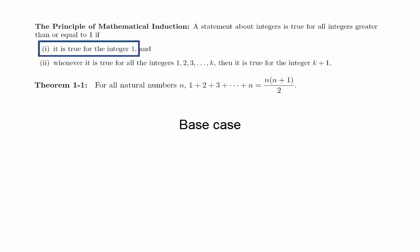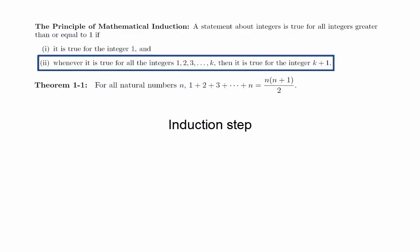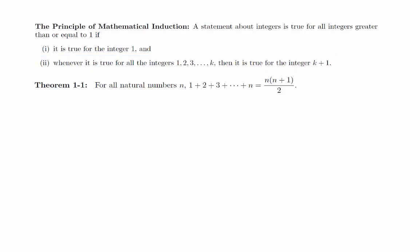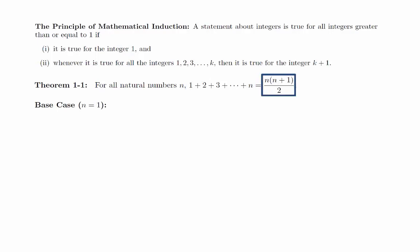The first condition is known as the base case, and is often just verifying a specific formula to be true. The second condition is known as the induction step. We will assume that the first k statements are true, and then try to prove that the k plus first statement is true. We will often only need to use the kth statement, but there are other situations in which we will need more. Base case: when n equals 1, the sum on the left is just the number 1. And if we plug in n equals 1 on the right, we get 1 times 2 over 2, which is just 1. And this proves the base case.